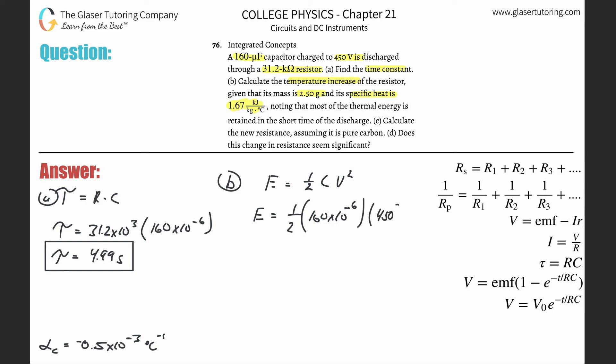Let's calculate it. So this is 0.5 times 160 times 10 to the minus 6 times 450 squared. So this works out to be about 16.2 joules of energy.